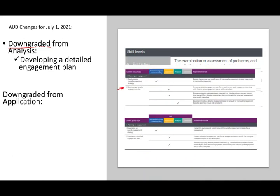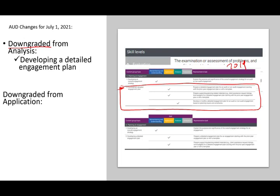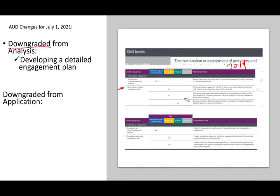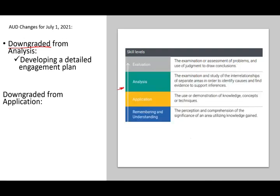Looking at 'developing a detailed engagement plan' under the 2019 blueprint — the previous blueprint — this is what you needed to know: prepare a detailed engagement plan for an audit or non-audit engagement, prepare a detailed engagement plan starting with the prior year engagement, and prepare supporting planning-related material. Now, the section on 'developing or modifying the detailed engagement' is gone — you don't have to worry about it anymore. The developing a detailed plan topic is now only under application, which is good for you as a candidate.